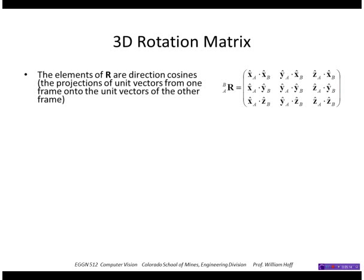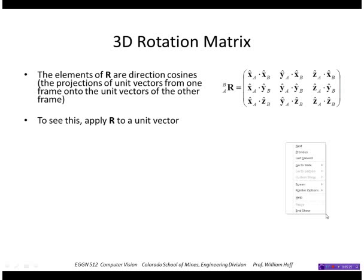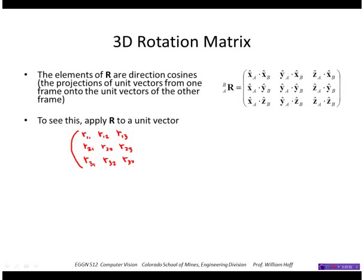Let me take an R composed of R11, R12, R13, R21, R22, R23, R31, R32, and R33. And I'll apply that to a unit vector in the x-axis. So that's the rotation from A to B of the unit vector x in the A frame. It's the unit vector of A expressed in A, which is just going to be a 1, 0, 0.